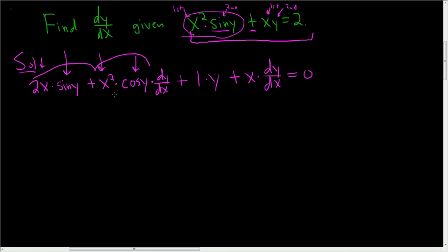Okay, in the next step, we're going to try to do this all at once. So, what you do is you keep everything with a dy/dx on one side. So, I'm going to write all of this on the left-hand side. So, we have x squared cosine y dy/dx plus x dy/dx. Everything else needs to go to the right-hand side. So, when you subtract them, they become negative. So, you get negative 2x sine y minus y.